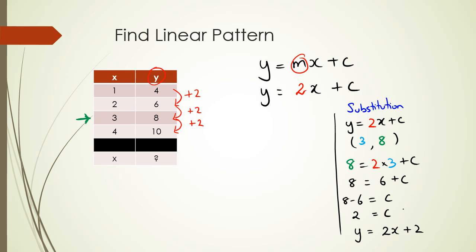I'll show you a second method for finding c. In straight line equations, c is known as the y-intercept — it's the value of y when x = 0. So when x = 0, y = c. Looking at the table, the x-values go 4, 3, 2, 1, so we can continue the pattern in the direction toward x = 0.